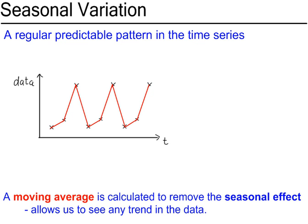This jagged effect on a graph, the seasonal variation, can be removed to show any underlying trend in the data. To do this, a moving average is calculated and then this jagged effect on the graph is removed, and then you will see if there is any underlying trend.